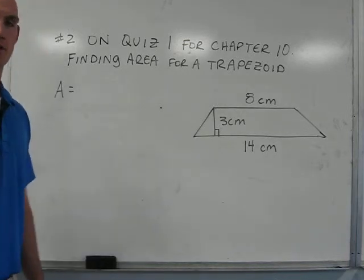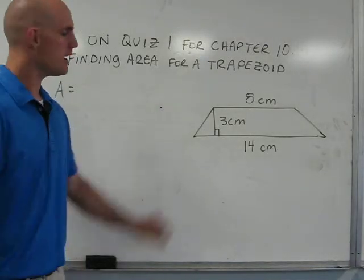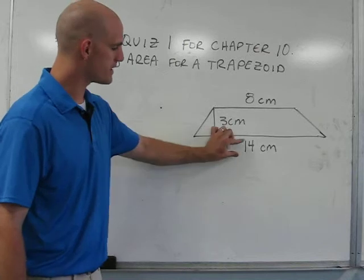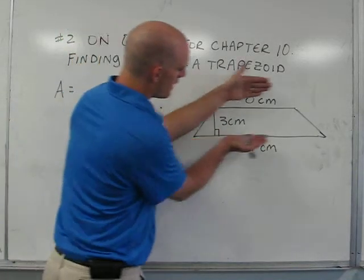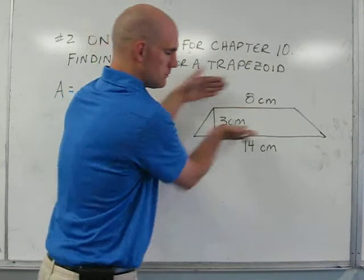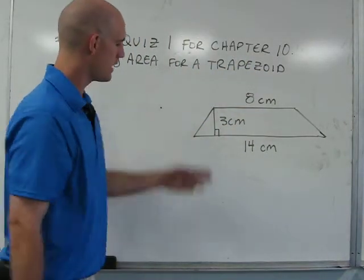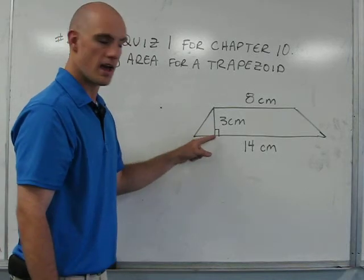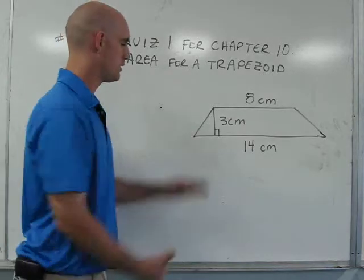To find the area of a trapezoid, we need to know three things. The first thing we need to know is the length of base one. The second thing we need to know is the length of base two. The bases are always the two sides that run parallel to one another in a trapezoid. The third thing we need to know is the height. The height always runs between base one and base two and is represented with a 90 degree angle marking its perpendicular line.